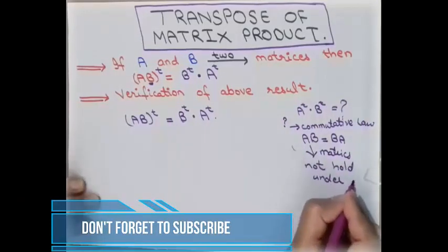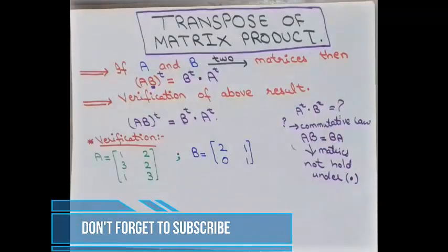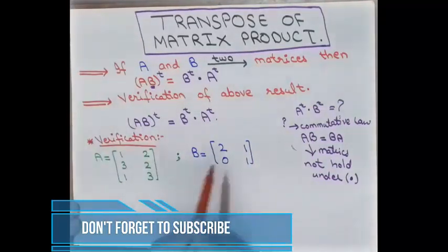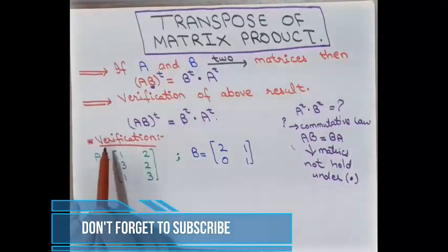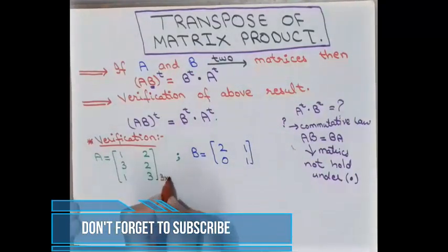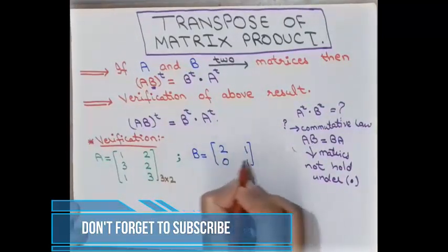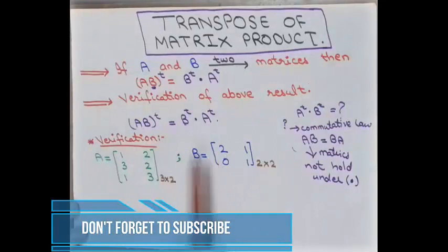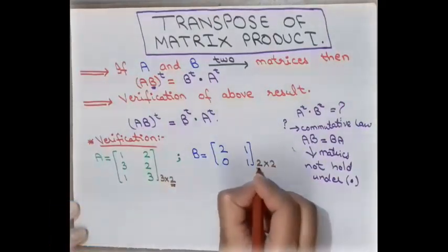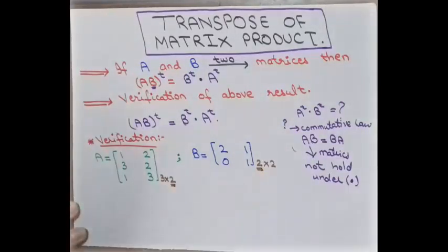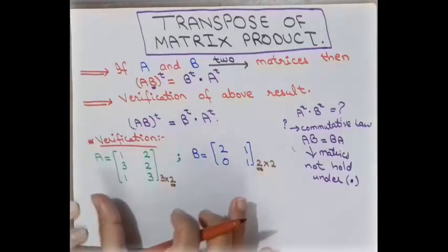For the sake of verifying the result, we have matrix A and matrix B. Check the order of both matrices. Matrix A has three rows and two columns, so the order is 3×2. Matrix B has two rows and two columns, so the order is 2×2. For the multiplication of these two matrices, the condition is that the number of columns of the first matrix must equal the number of rows of the second matrix.